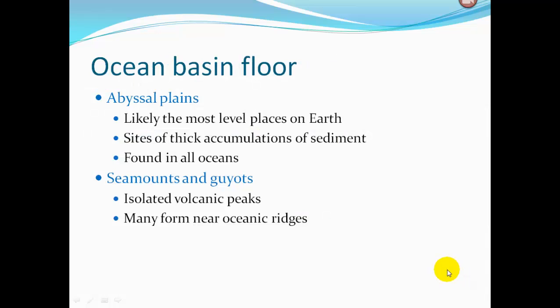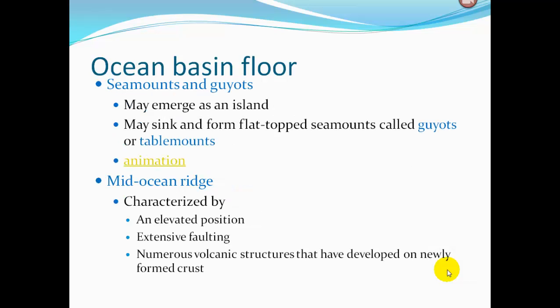Now for the features of the ocean basin floor. The abyssal plain is likely the most level place on Earth — sites of thick sediment accumulations found in all oceans. On the abyssal plain we find seamounts and guyots — isolated volcanic peaks that form mainly near oceanic ridges. Seamounts may emerge as islands; they can then sink and form flat-topped seamounts called guyots or table mounts, because the tip gets eroded flat before sinking.